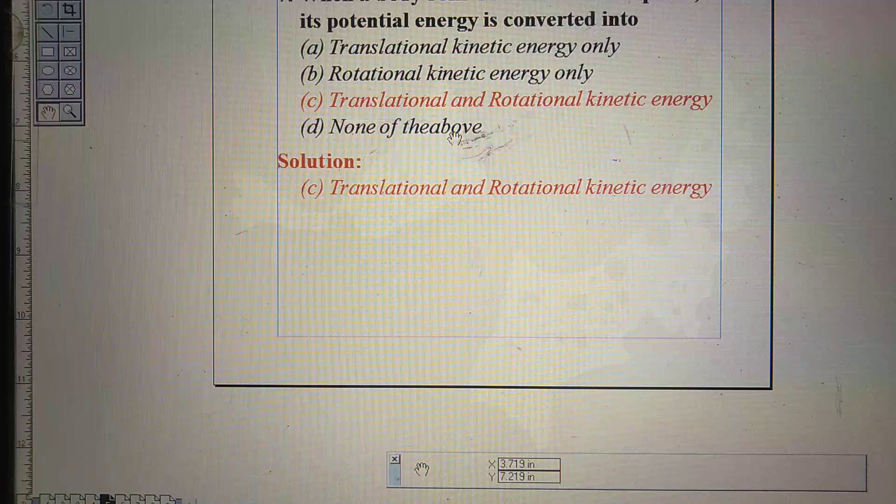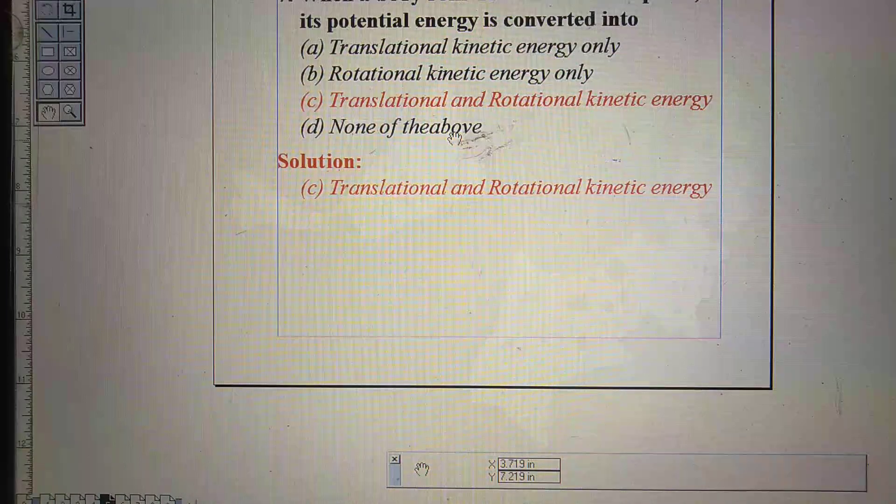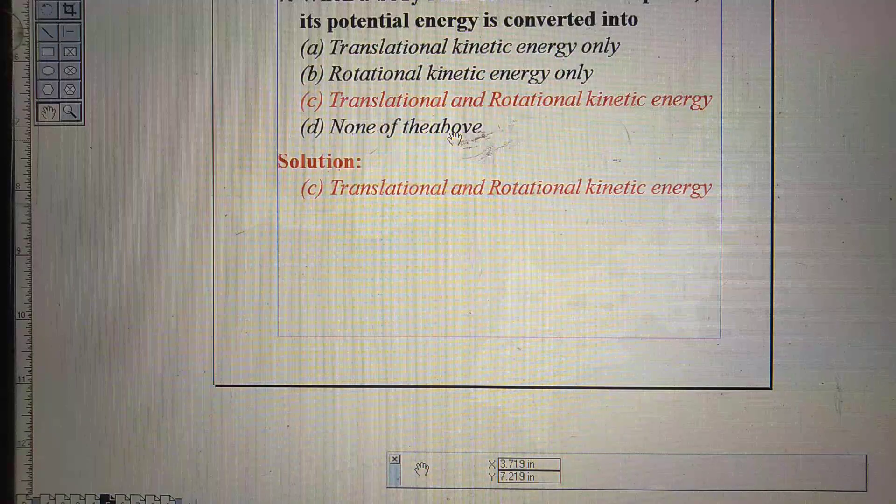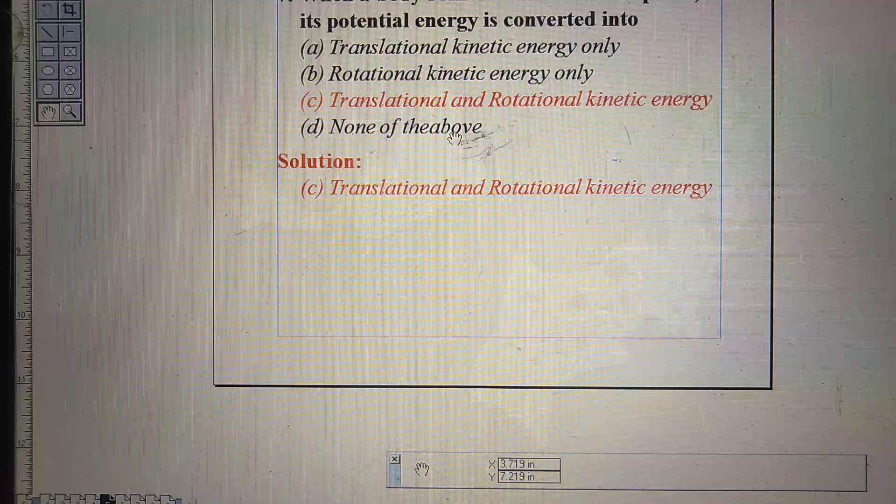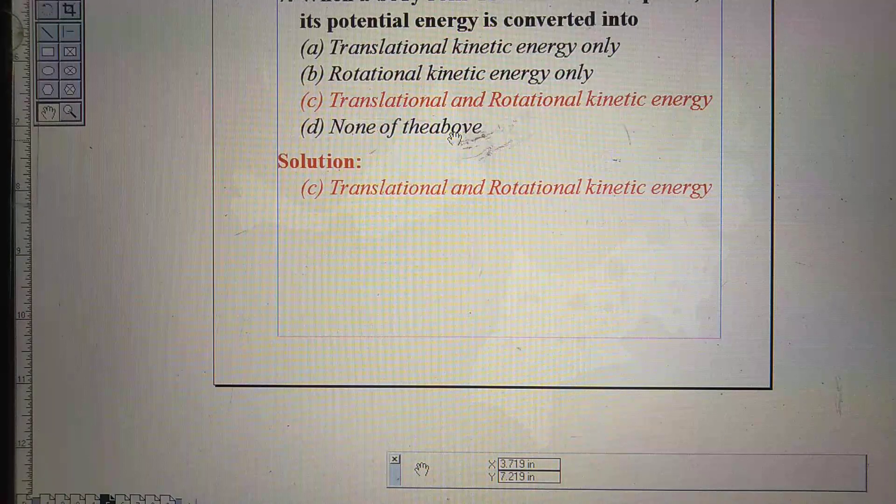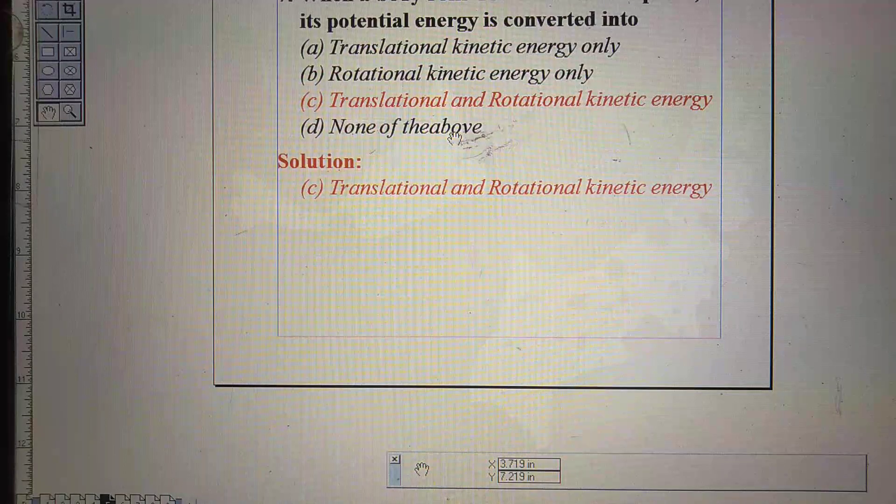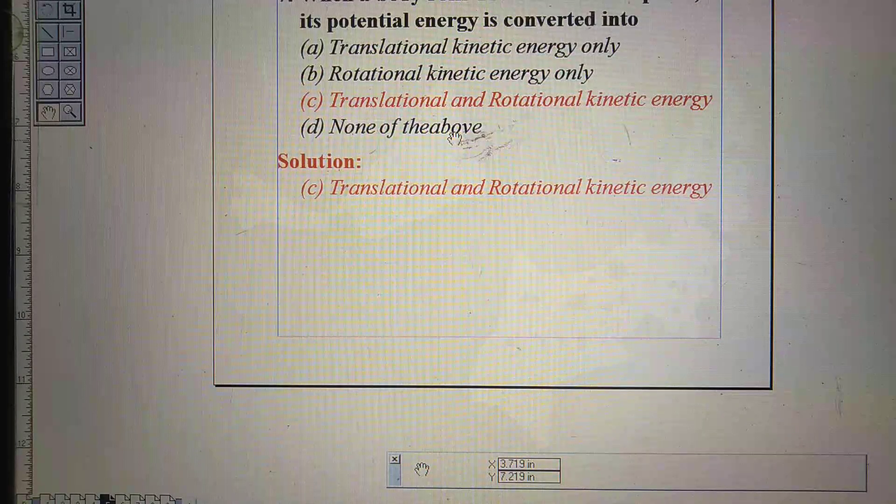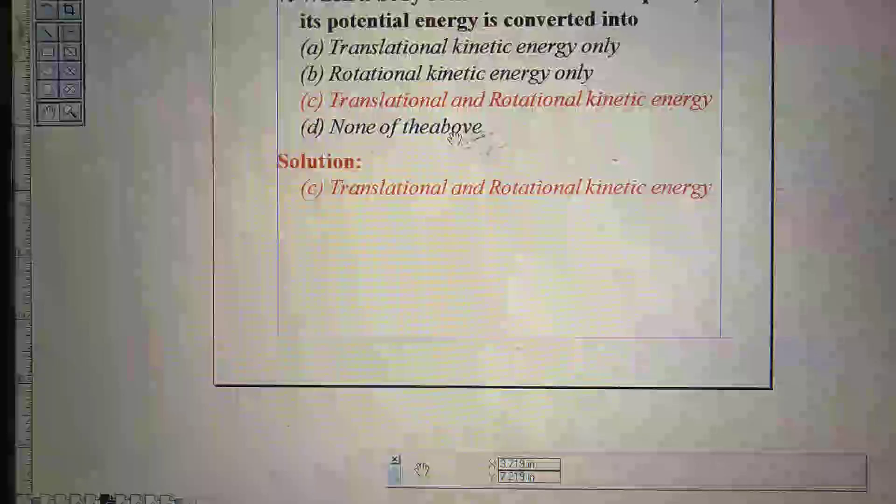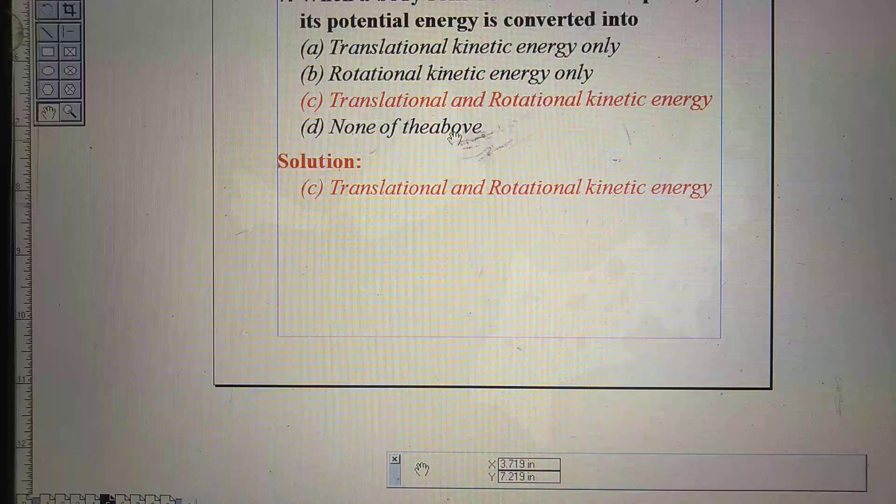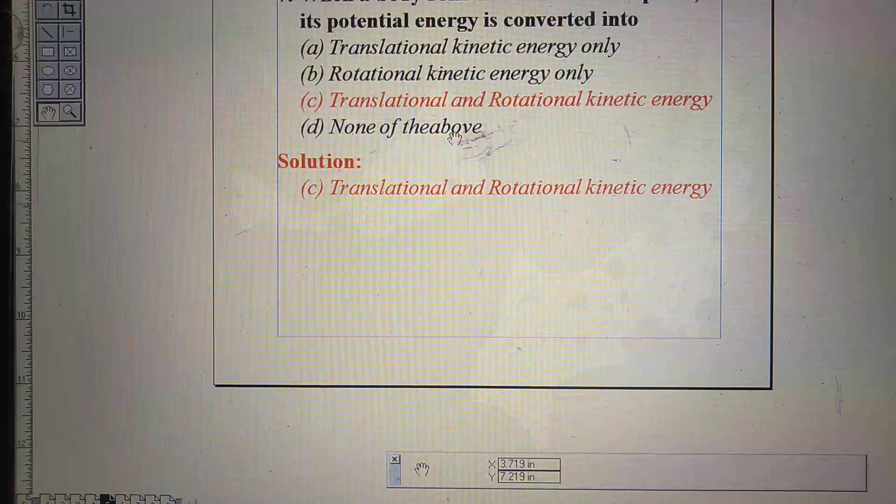Whenever a body rolls, two motions will be there. One is translational, for which it is moving forward direction and another motion is rotational. So, for these two motions, we have two kinds of kinetic energy: one is translational kinetic energy, another is rotational kinetic energy. Right option is C, translational and rotational kinetic energy.